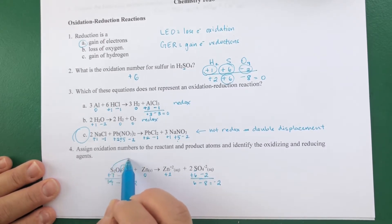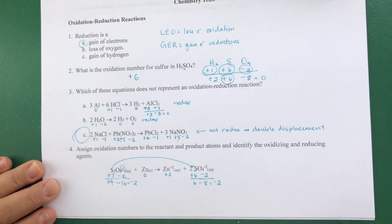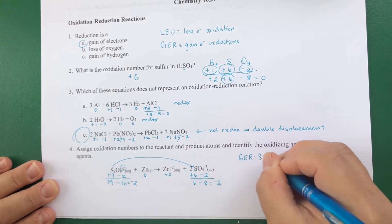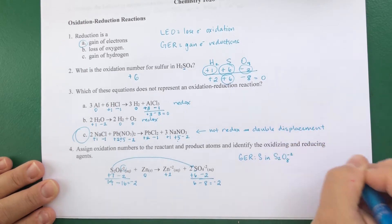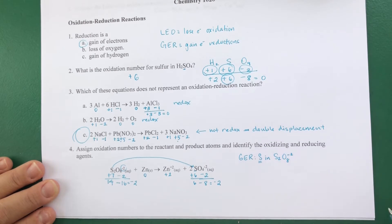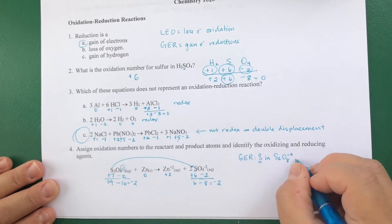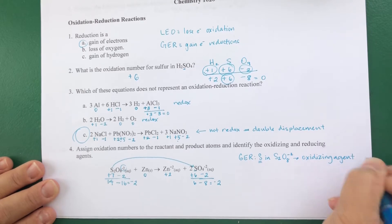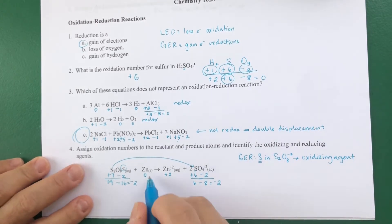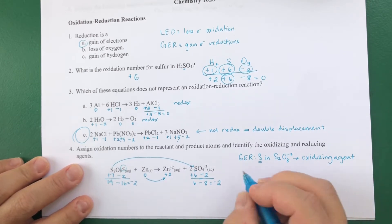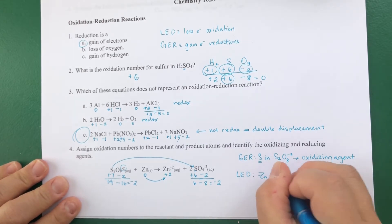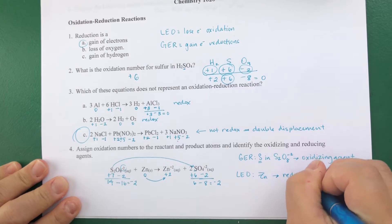Sulfur goes from plus 7 to plus 6 — when the oxidation number decreases, it gains electrons, so that's reduction. The sulfur in S₂O₈²⁻ gains electrons, making it the oxidizing agent. Zinc goes from zero to plus 2 — it loses electrons, which is oxidation. Zinc becomes more positive, so it lost electrons, and whoever is oxidized is the reducing agent.